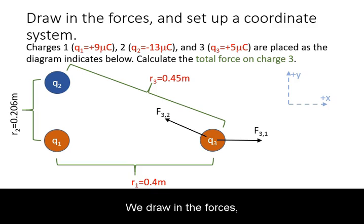We draw in the forces on the target by each of the other charges. Keep in mind that like charges repel and opposite charges attract. In this case, the force on 3 by 1 is repulsive. The force on 3 by 2 is attractive. Don't forget to set up the coordinate system.